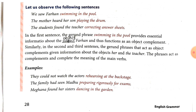Now students, let us observe the following sentences. First: 'We saw Farhan swimming in the pool.' Second: 'The mother heard her son playing the drum.' Third: 'The students found the teacher correcting answer sheets.' In the first sentence, the gerund phrase 'swimming in the pool' provides essential information about the object 'Farhan' and thus functions as an object complement. Similarly, in the second and third sentences, the gerund phrases 'playing the drum' and 'correcting answer sheets' act as object complements and give information about the objects 'her son' and 'the teacher'. The phrases act as complements and complete the meaning of the main verb.